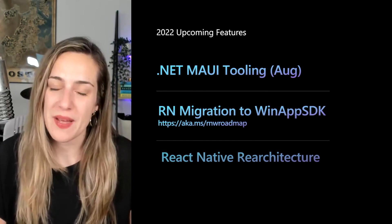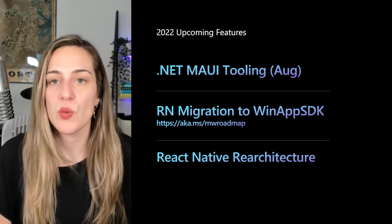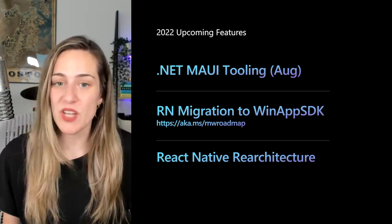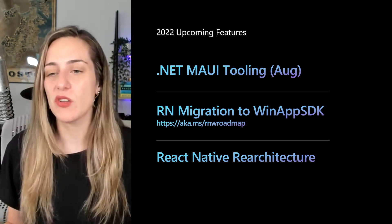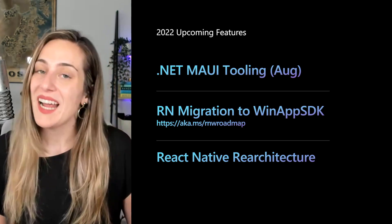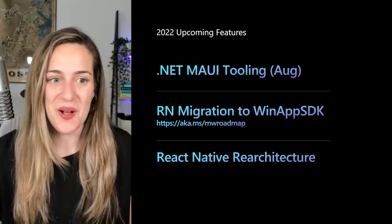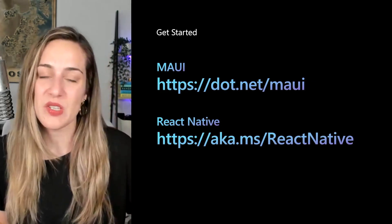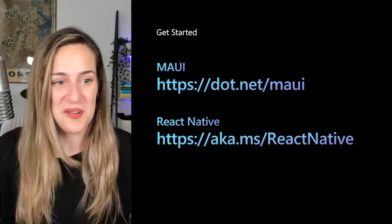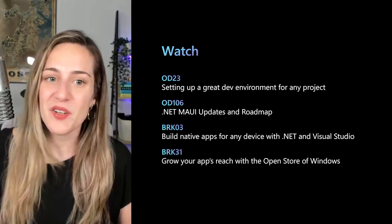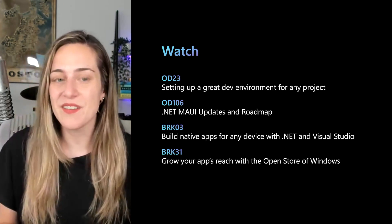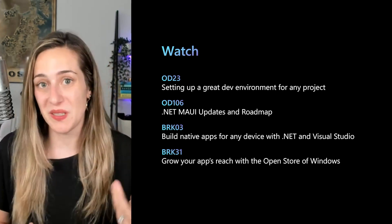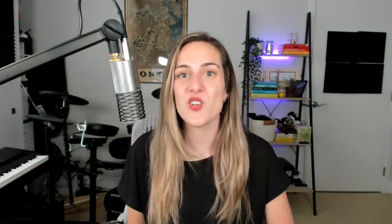Both platforms have a really exciting year ahead. React Native is working on migrating their Windows backend from UWP to WinApp SDK and aligning with the React Native core re-architecture. .NET MAUI just shipped as part of .NET 6 and the tooling experiences will be generally available by the end of Q3, with .NET 7's release gearing up for the fall. Getting started with either of these technologies is super easy — just go to the links on this slide. There are plenty of other sessions about .NET MAUI, React Native, and developing amazing apps for Windows here at Build. Thank you so much for joining us.